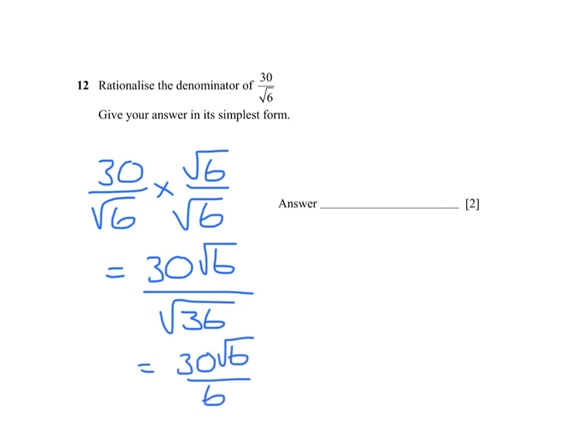The last thing I need to do here, 6 and 30 cancel to give 5. So the answer to the question is 5 times the square root of 6.